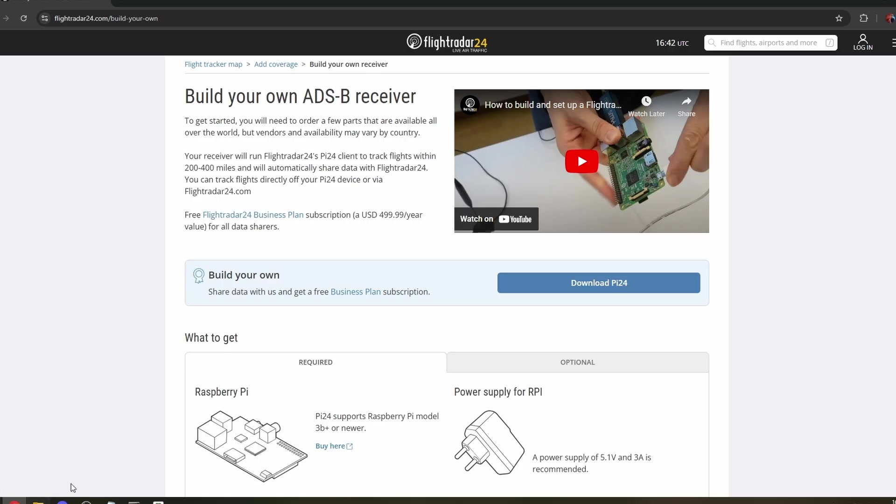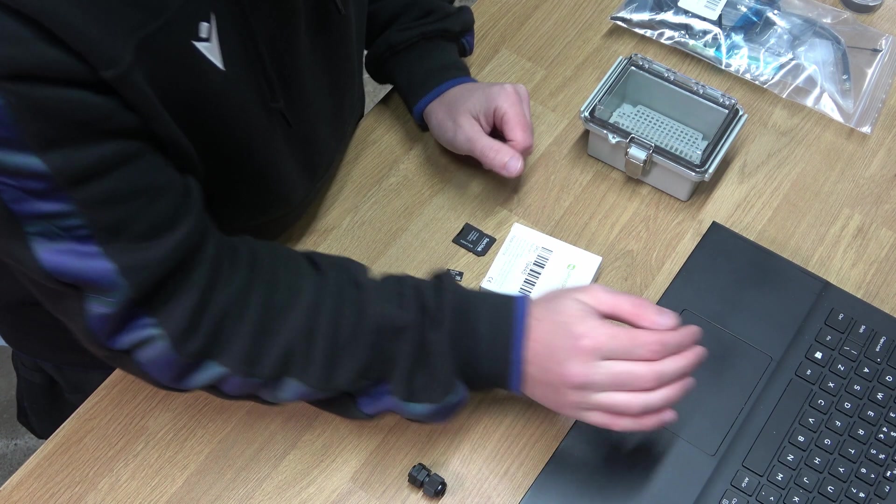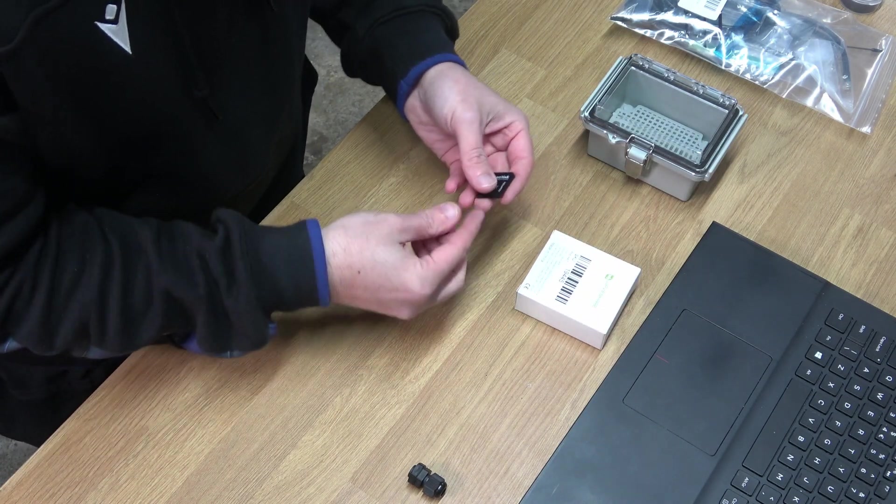I'm going to use Flightradar24 setup. They've already got an image on their website so you can just download that, install that on your Raspberry Pi and you're basically good to go. So we will download this and whilst that's installing we'll prep the SD card.